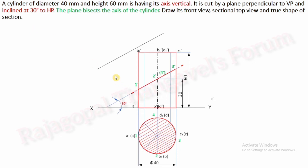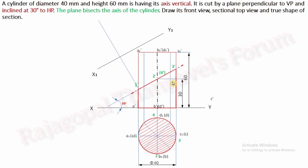You have to draw a plane of projection parallel to the section plane. Parallel to the section plane, draw the plane of projection which is X1, Y1. X1, Y1 is the parallel plane of projection parallel to the section plane. Then extend perpendicular projectors — ensure this perpendicular projector is at 90 degrees to X1, Y1. From each and every cutting point of the section plane, extend a perpendicular projector.